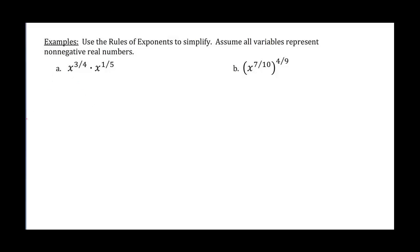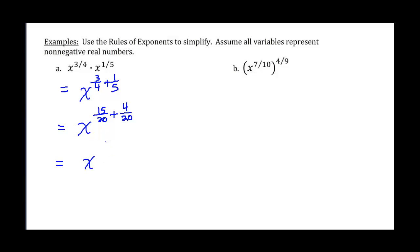Let's use the rules of exponents to simplify. Assume all variables represent non-negative real numbers. Our first example is x to the 3 fourths times x to the 1 fifth. The bases are the same and we're multiplying, so we add the exponents: 3 fourths plus 1 fifth. Getting a common denominator of 20, we get 15 over 20 plus 4 over 20, which equals x to the 19 over 20.